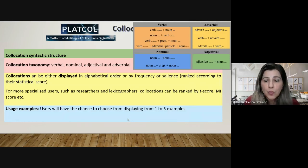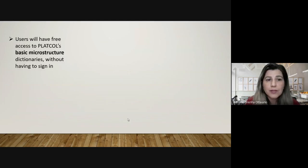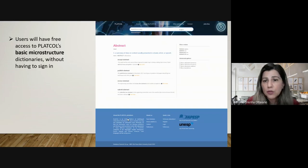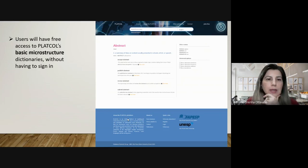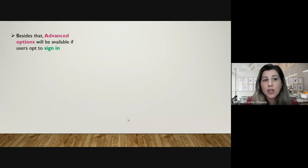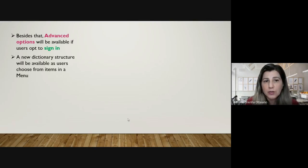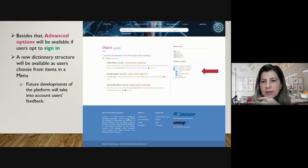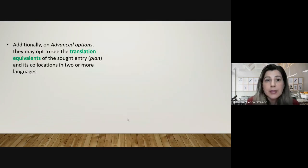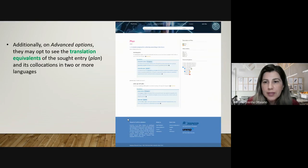Users will have free access to the platform and to PLATCOL's basic microstructure, as seen in this screenshot from our prototype — they do not need to sign in. Besides that, advanced options will be available if users opt to sign in. A new dictionary structure will be available as users choose from items in the menu. As you can see on the right, they can click and choose whatever they want to be displayed. Future developments of the platform will also take into account users' feedback. Additionally, on advanced options, users may also opt to see translations, as shown on the right — the equivalents of the sought entry, for example 'plan' and its collocations in one, two or more languages.